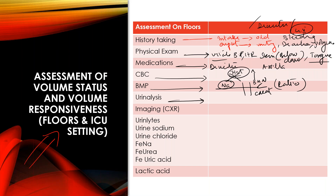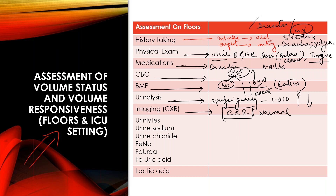Look at urinalysis — specifically urine specific gravity. Normal specific gravity is 1.010. If it is high, patient is dry; if it is low, patient may be overloaded or has polydipsia. Look at chest x-ray — if it shows no pleural effusion and no pulmonary edema, the chest x-ray is normal and patient is likely dry.